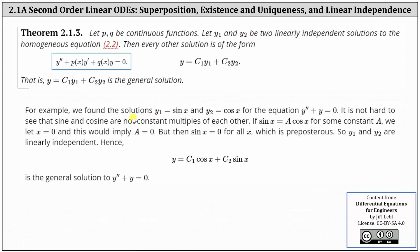For example, y₁ = sin(x) and y₂ = cos(x) are solutions to y'' + y = 0. Since sin(x) and cos(x) are not constant multiples of one another, they are linearly independent. Therefore the general solution to y'' + y = 0 is y = c₁·cos(x) + c₂·sin(x). I hope you found this introduction helpful.